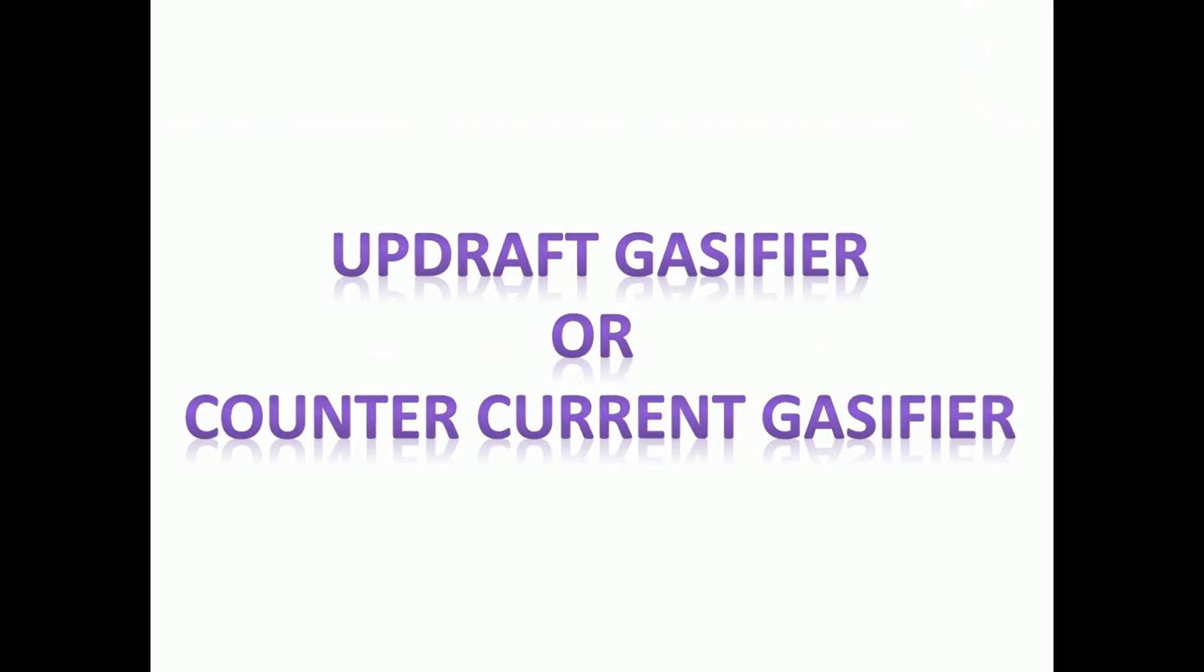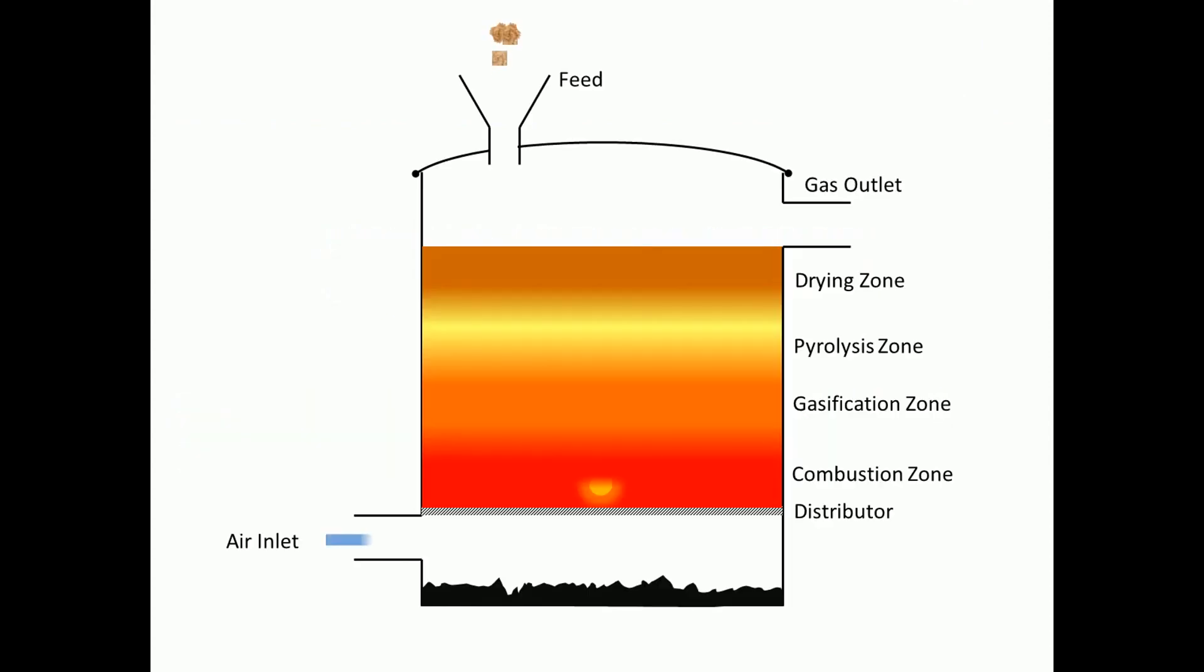The first one is updraft gasifier or counter-current gasifier. In the updraft gasifier, the combustion reaction occurs at the bottom, followed by the reduction reaction in the gasification zone. In the upper part, heating and pyrolysis of the feedstock occur as a result of heat transfer by forced convection and radiation from the lower zones.